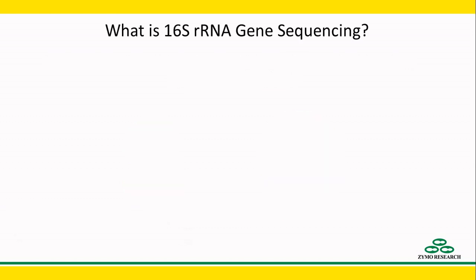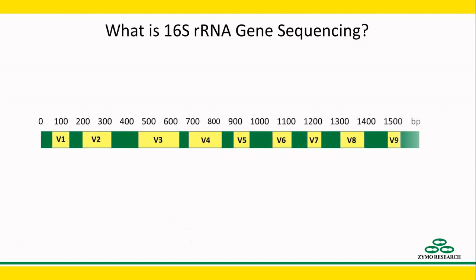So what is 16S rRNA gene sequencing? 16S rRNA gene sequencing, or simply 16S sequencing, utilizes PCR to target and amplify portions of the gene encoding for the 16S ribosomal RNA. The gene contains nine hypervariable regions whose sequences can be unique to separate species.